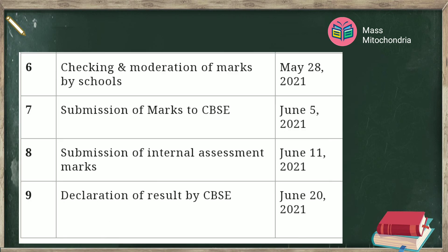Checking and moderation of marks by schools — May 28th. Submission of marks to CBSE — June 5th. Submission of internal assessment marks — June 11th. Declaration of result by CBSE — June 20th.